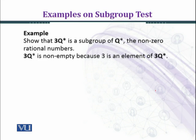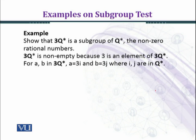So we can see that the set 3Q* is non-empty. The first condition is satisfied for the test. Now we move to the second condition and we have to verify that the closure property holds for every element of 3Q*. For every a, b in 3Q*, we know that the elements of 3Q* can be written in this form: a = 3i...